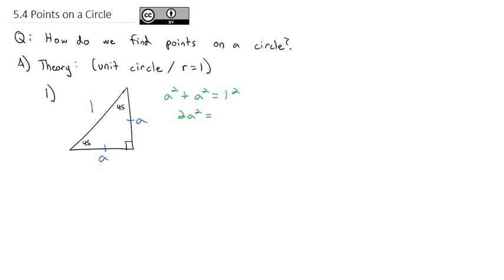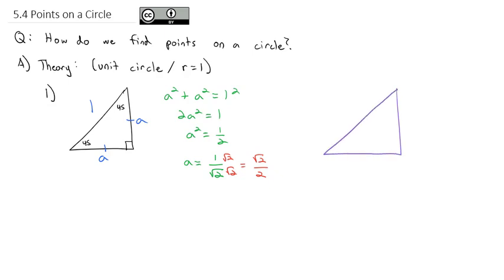Combining like terms gives us 2a² = 1. Dividing by 2, a² = 1/2. Taking the square root of both sides: a = 1/√2. We rationalize the denominator by multiplying by √2/√2, giving us √2/2. So for a 45-degree angle (also π/4 radians) with a hypotenuse of 1, the other two side lengths are both √2/2.